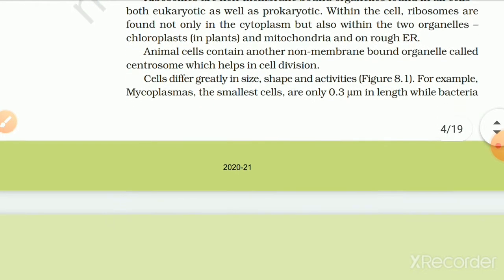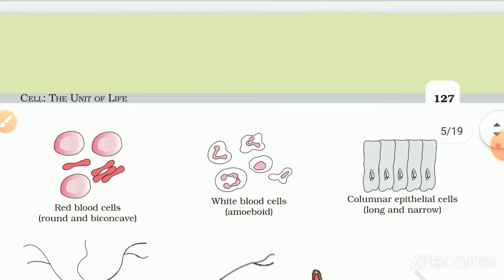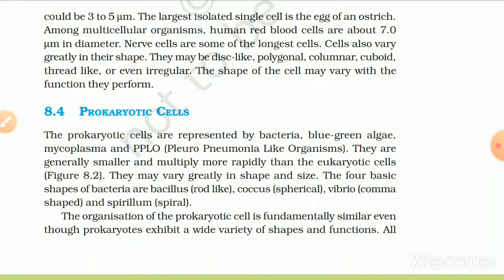Cells differ greatly in size, shape and activities. For example, mycoplasmas, the smallest cells, are only 0.3 micrometers in length, while bacteria could be 3 to 5 micrometers. The largest isolated single cell is the egg of an ostrich. Among multicellular organisms, human red blood cells are about 7 micrometers in diameter. Nerve cells are some of the longest cells. Cells also vary greatly in their shape — they may be disc-like, polygonal, columnar, cuboidal, thread-like or even irregular. The shape of a cell may vary with the function it performs.